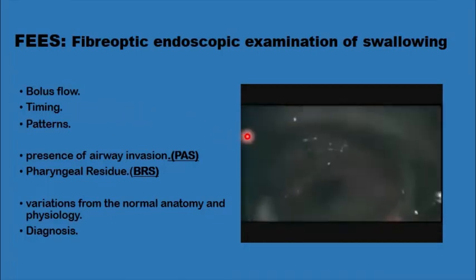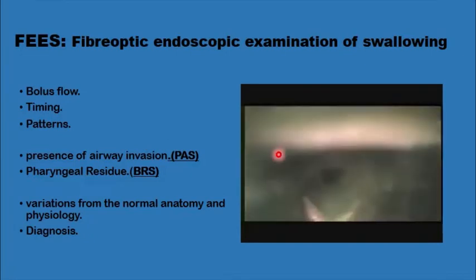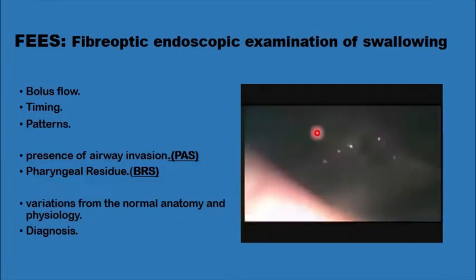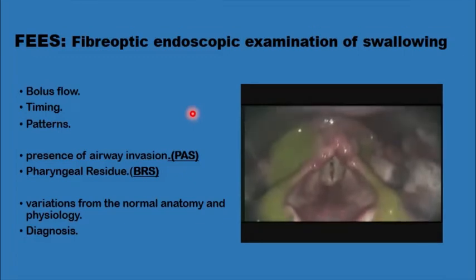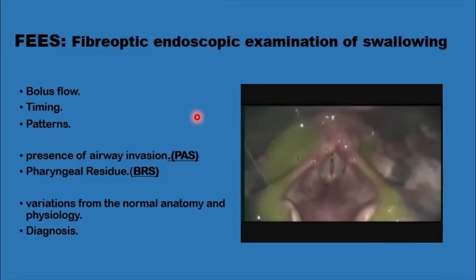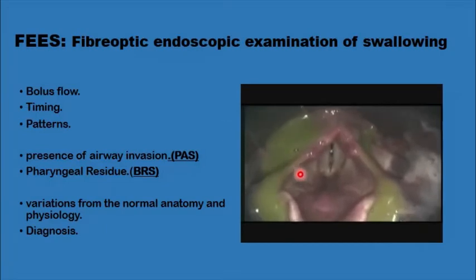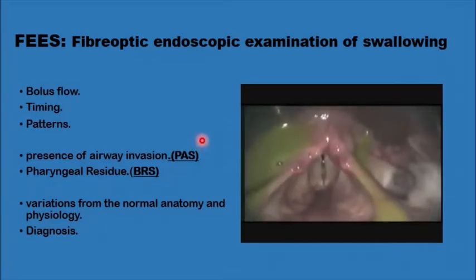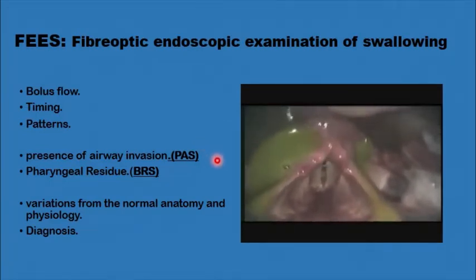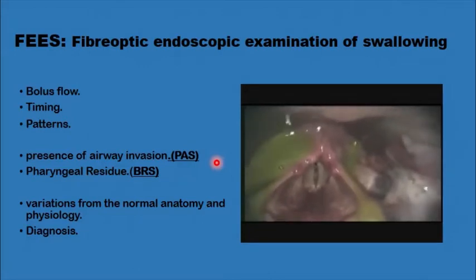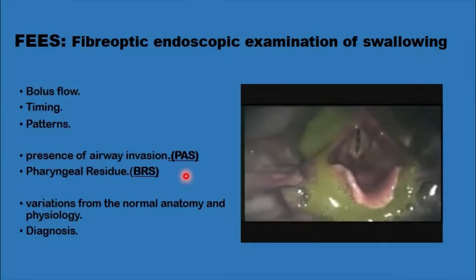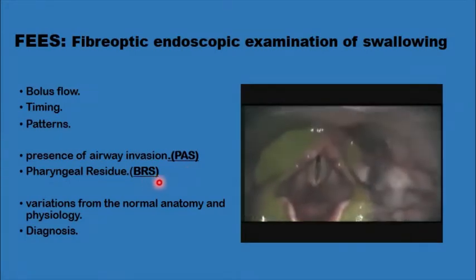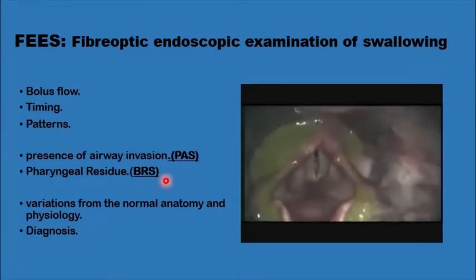You would see, for example, the pooling of the bolus in the hypopharynx above the cricopharyngeus, as in this patient, or any signs of laryngeal penetration or tracheal aspiration. These findings are scored using the Penetration Aspiration Scale for aspiration and the Bolus Residue Scale for dysphagia.